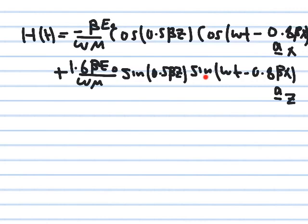The resulting magnetic field has two components: one in the x direction and one in the z direction, both traveling with the electric field. The z-direction component is in the direction of wave propagation (traveling in x), while the x-direction component is normal to the propagation direction. Both have the same dependence on z and x as the given electric field.